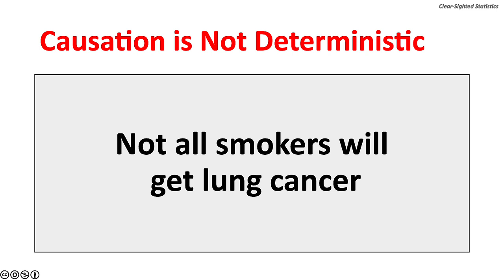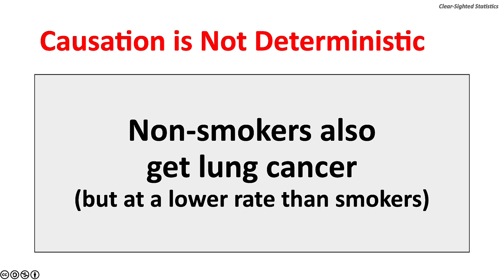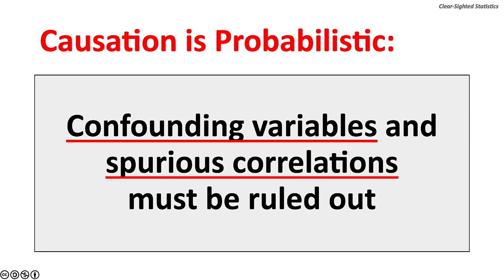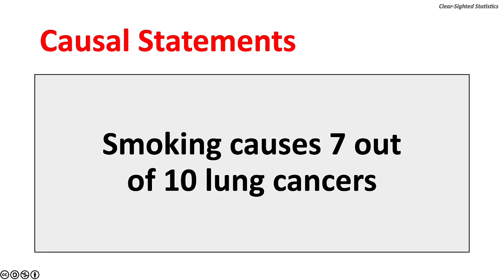Causation is not deterministic. Not all smokers will get lung cancer, and non-smokers also get lung cancer, but at a much lower rate. Causation is probabilistic — Y is more likely to occur when X has happened. When considering causal relationships, confounding variables and spurious correlations must be ruled out.